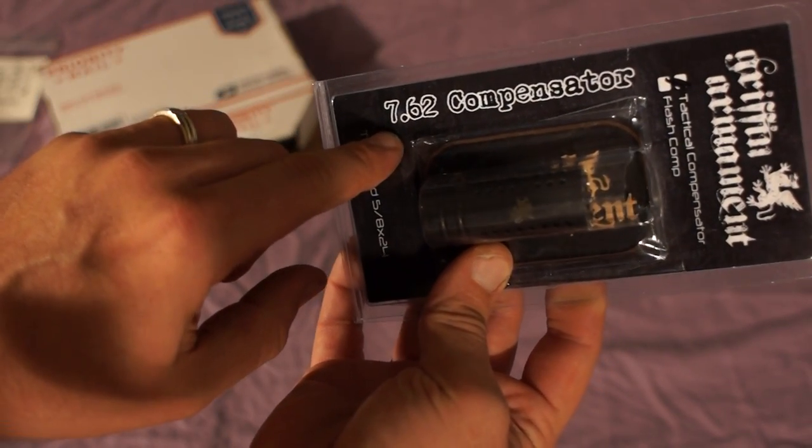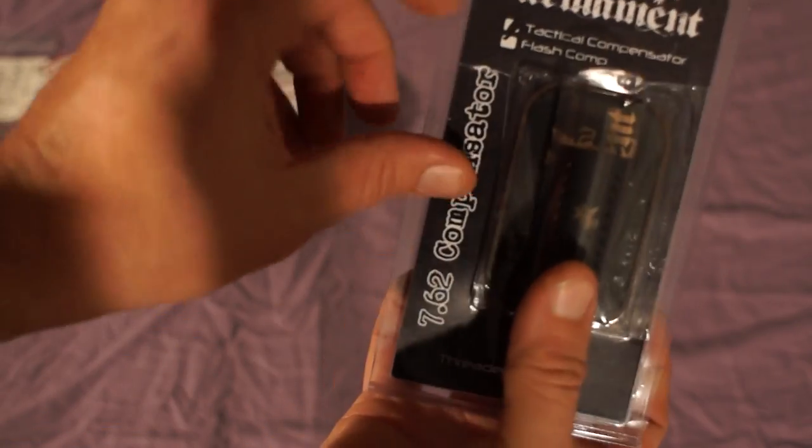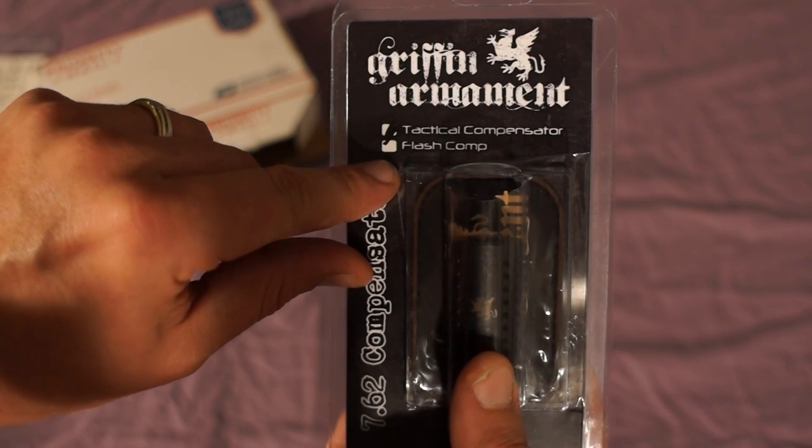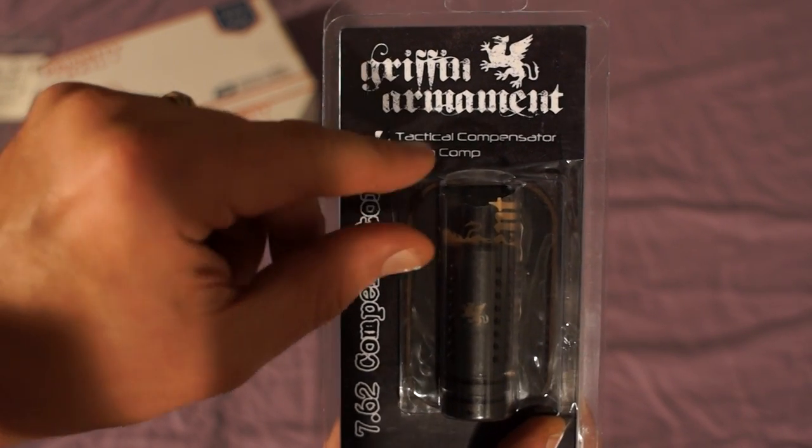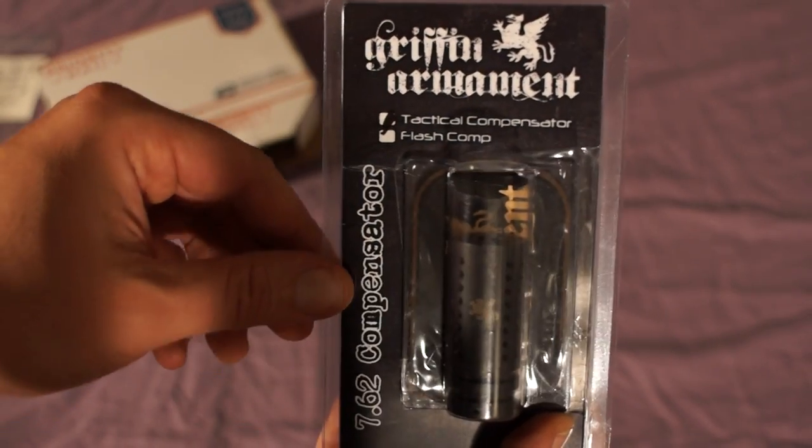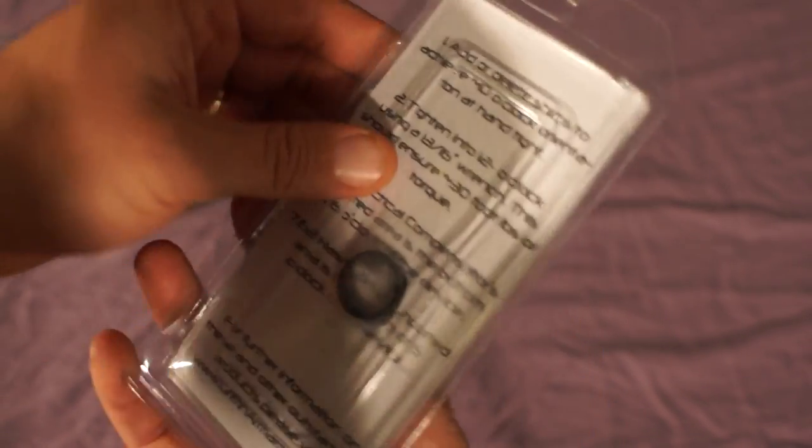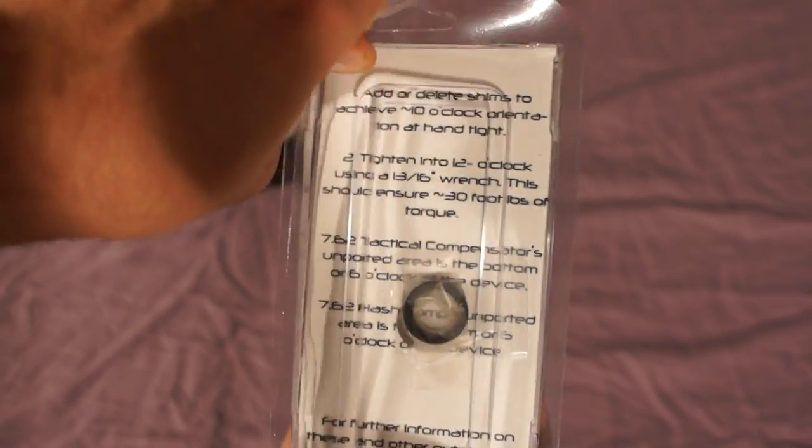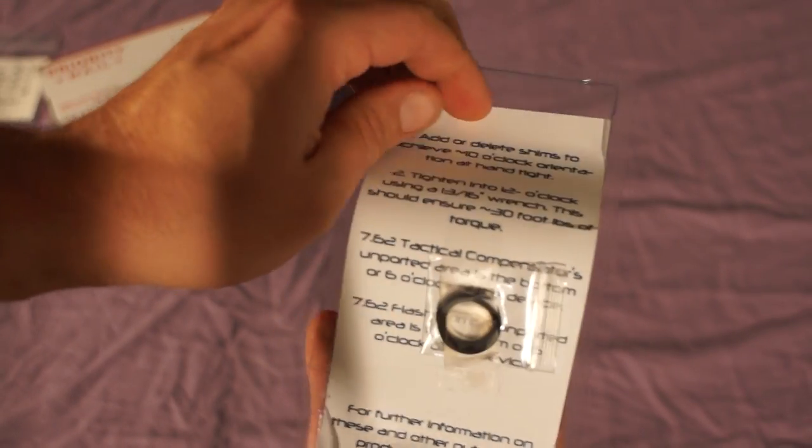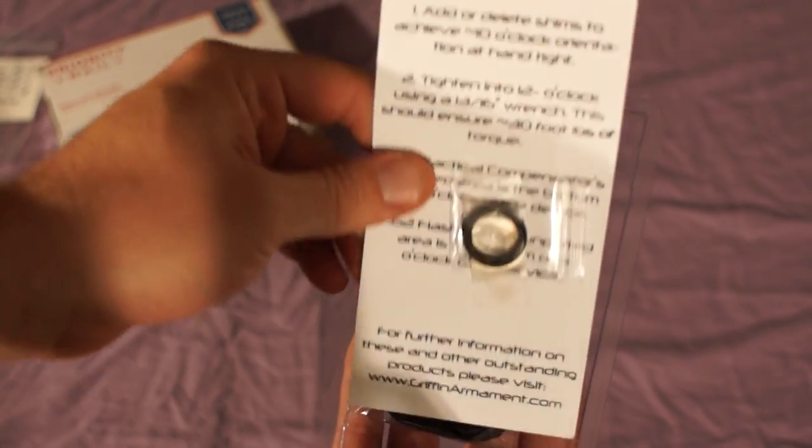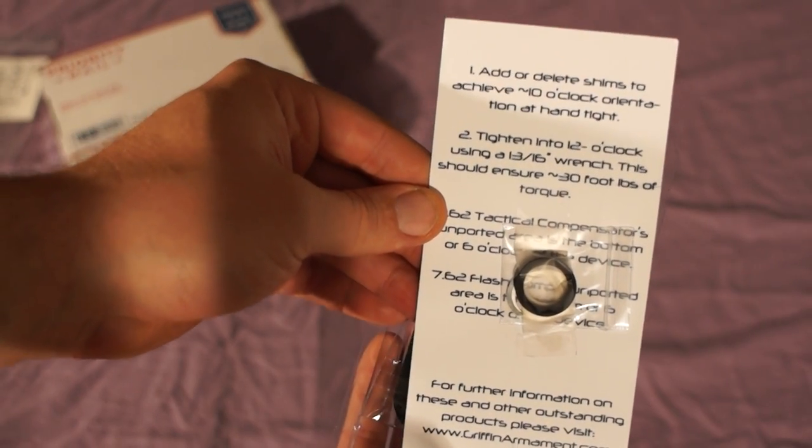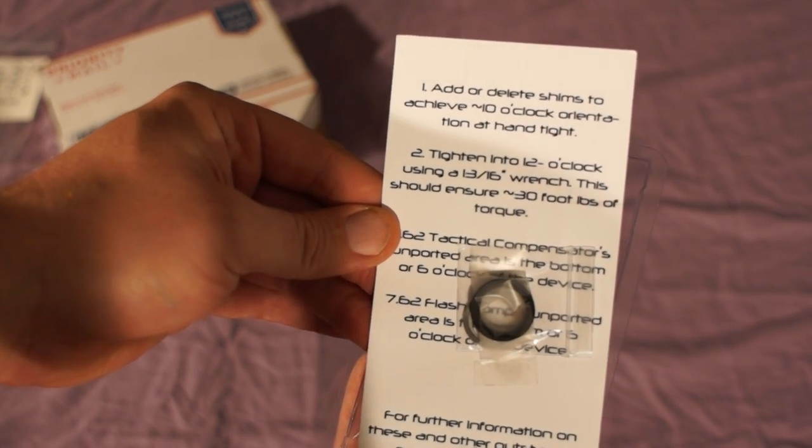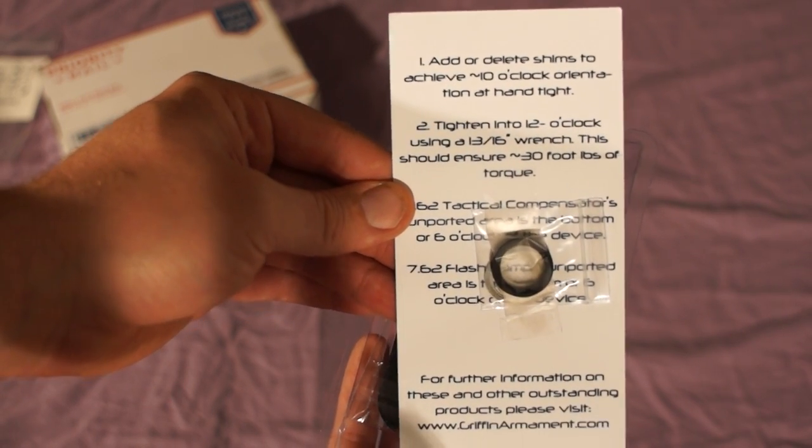It is the 7.62 compensator and it is the tactical compensator model, not the flash comp. The flash comp is similar but it adds some flash hider prongs on the end. On this side we have the extension and we have the shims so that we can time the muzzle device properly, and they're taped on here to the instruction card. Instructions are very simple. Pretty much anybody should be able to follow these instructions and properly time their muzzle device.